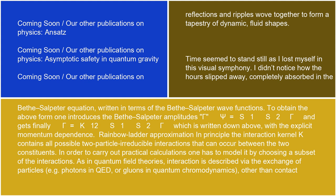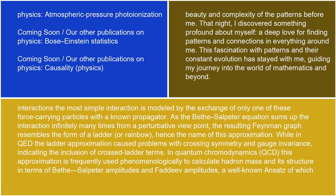Rainbow ladder approximation: in principle, the interaction kernel K contains all possible two-particle-irreducible interactions that can occur between the two constituents. In order to carry out practical calculations, one has to model it by choosing a subset of the interactions. As in quantum field theories, interaction is described via the exchange of particles — e.g. photons in QED or gluons in quantum chromodynamics — the most simple interaction is modeled by the exchange of only one of these force-carrying particles with a known propagator. As the Bethe-Salpeter equation sums up the interaction infinitely many times from a perturbative viewpoint, the resulting Feynman graph resembles the form of a ladder or rainbow, hence the name of this approximation.